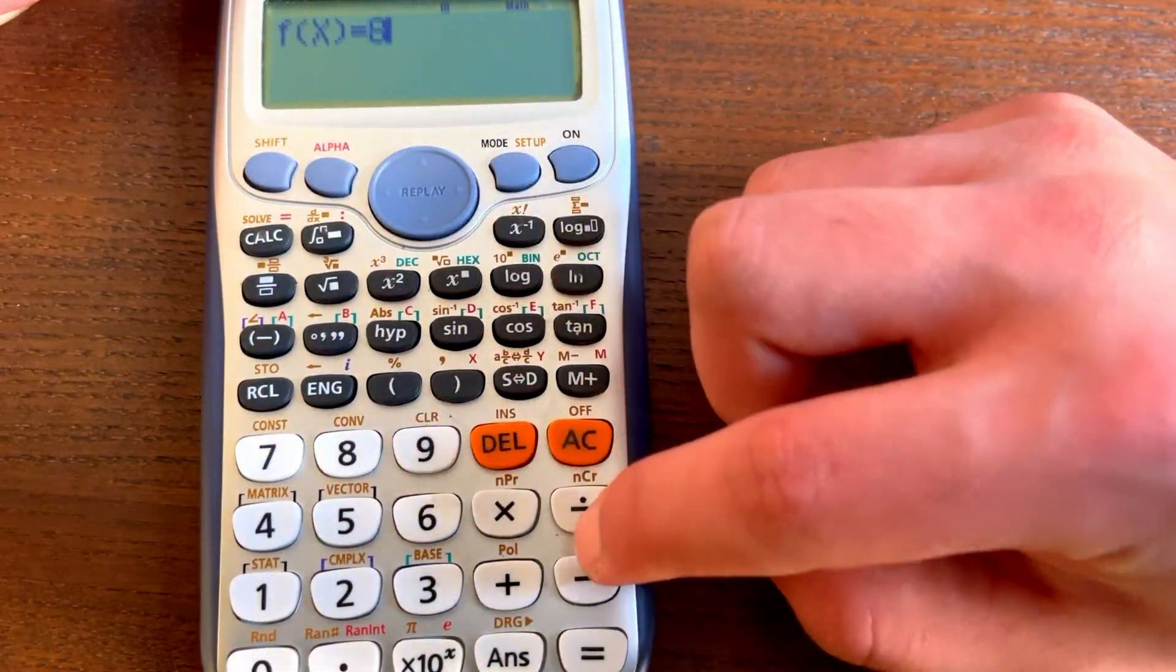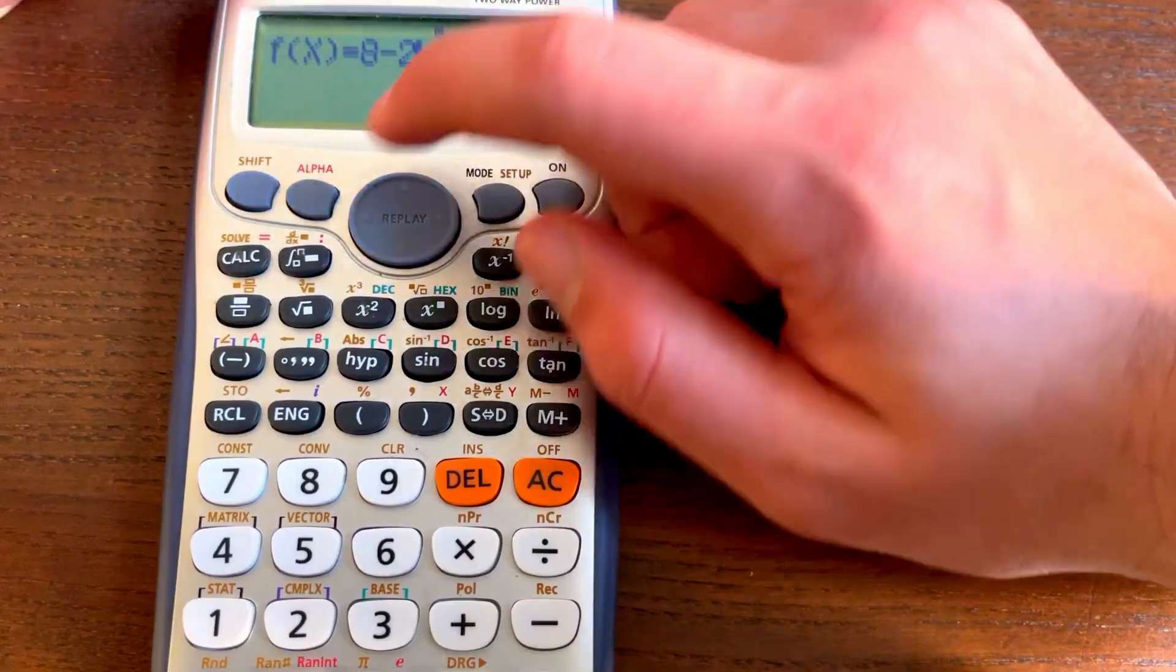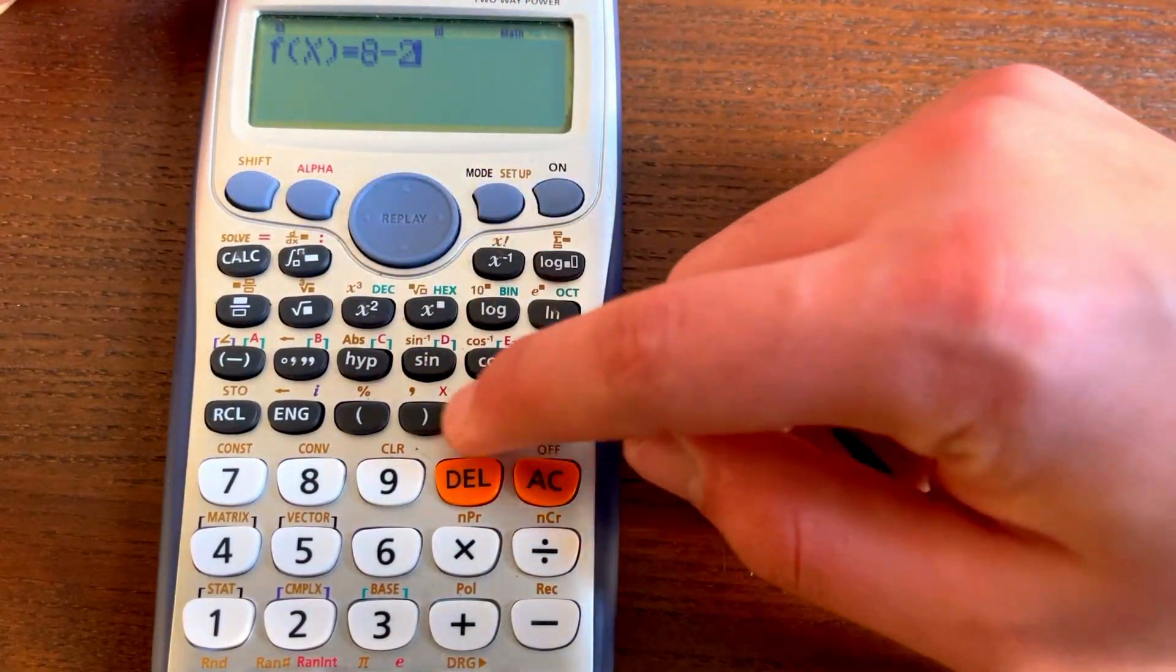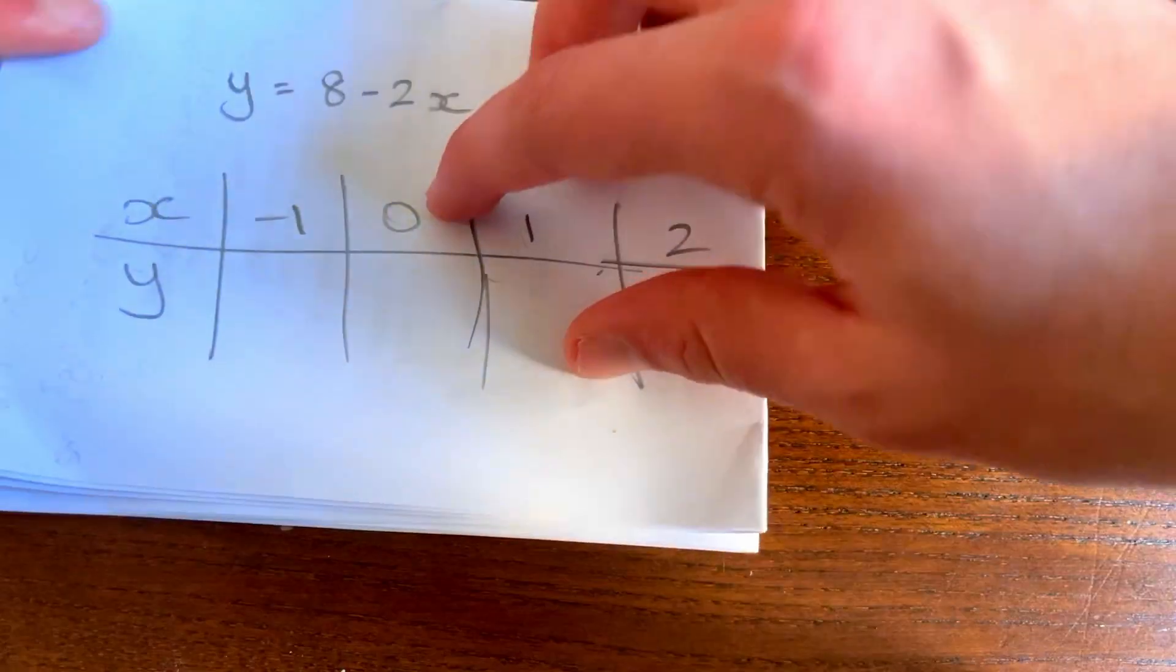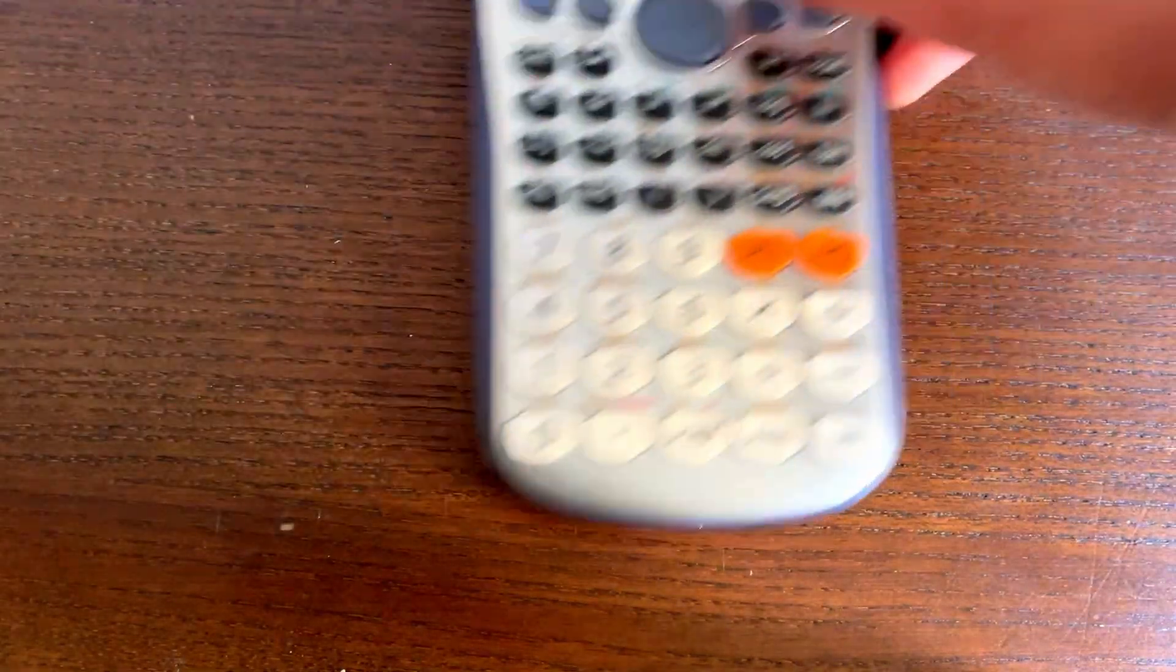So 8 minus 2x, to get x you click alpha, and then you look for the x right here, and then we can click equals. And now it says start, so where do we want to start? So over here, we want to start at minus 1, so we can write that in.